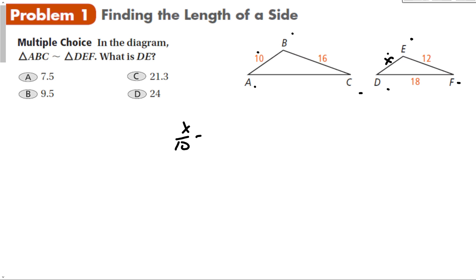AC doesn't help me because I don't know how big AC is. So this 18 can't help me at all. I'll put an X there. That means that these two sides are the ones that can help me. Make sure you put the same triangle on top both times, or on the bottom both times. So we're going to put X over 10 equals 12 over 16. Now we have my proportion. All we have to do is cross multiply and divide. That's 16X equals 120. Divide both sides by 16, and I get X equals 7.5, which is A.